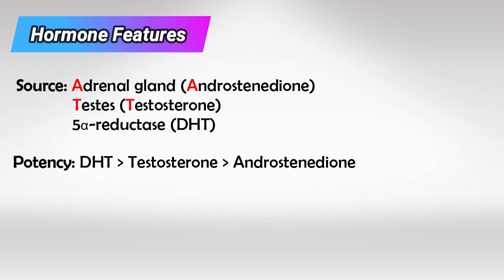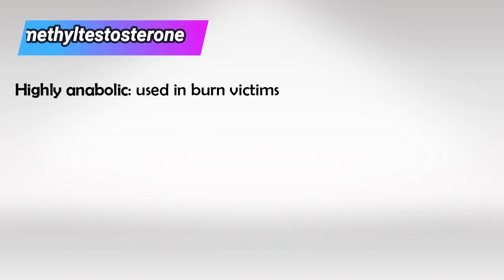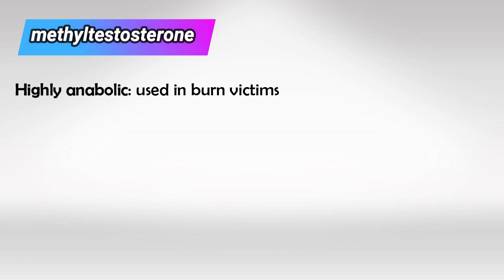Other than 5-alpha reductase, we have another enzyme that acts on androgens called aromatase. Aromatase is a cytochrome P450 enzyme and it converts androgens to estrogen. Now, methyltestosterone is the medical form of testosterone.